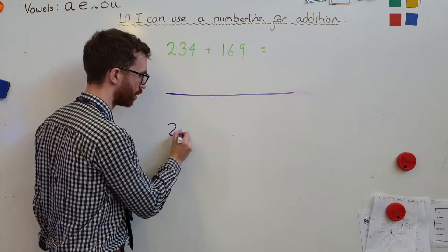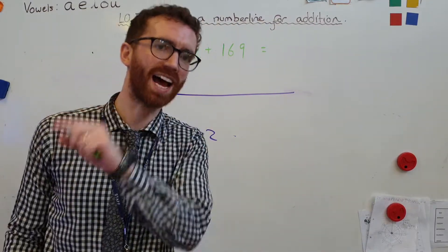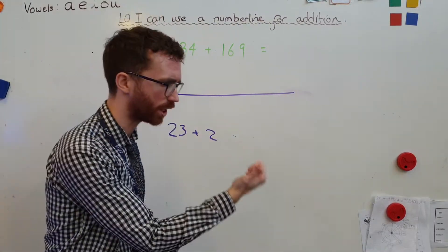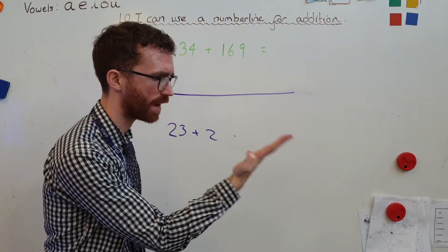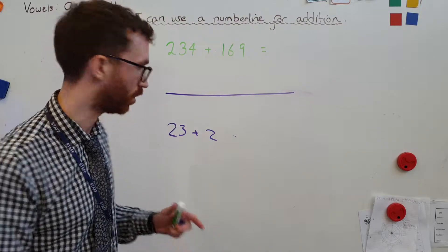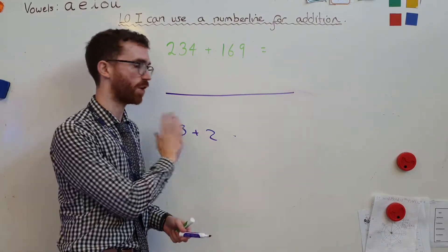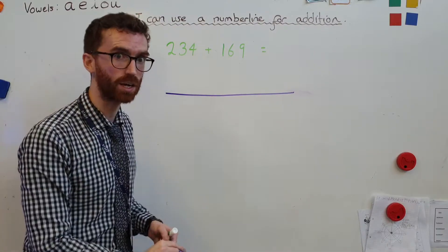Well, if I had the calculation 23 and 2, I'm not going to start with 2 and add on 23. 2, 3, 4, 5, 6, 7, 8, 9. No, no, no. That would take way too long. What we would all do is put 23 in our head, 23, and we'd add 2, 24, 25. Good. So I start with the bigger number.